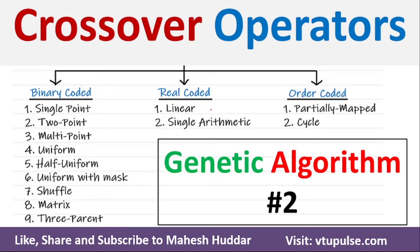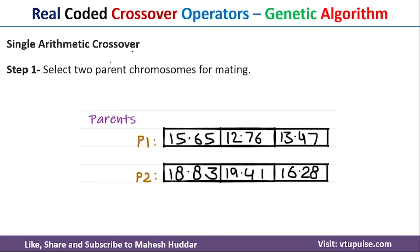Welcome back. In the previous video I discussed binary coded crossover operators in genetic algorithm. In this video I will discuss real coded and order coded crossover operators. The first real coded crossover operator is single arithmetic crossover. We need to select two parent chromosomes for mating. To select two parents we need to use the fitness score, which is calculated with the help of a fitness function.